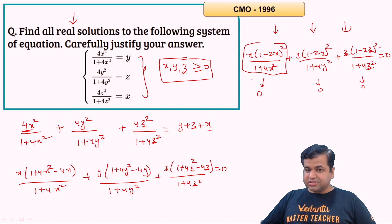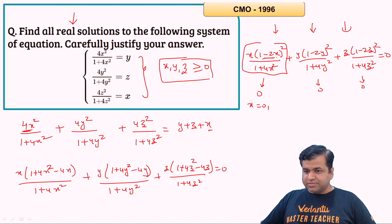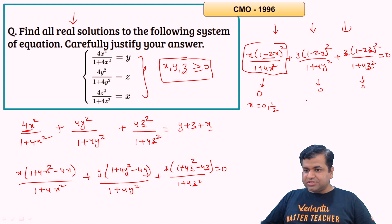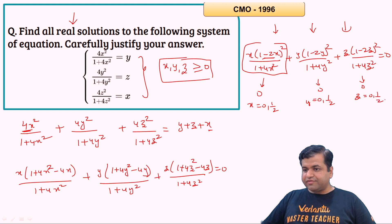Each term is 0 only when x = 0 or (1 − 2x)² = 0, i.e., x = 0 or x = 1/2. Similarly, y = 0 or y = 1/2, and z = 0 or z = 1/2.